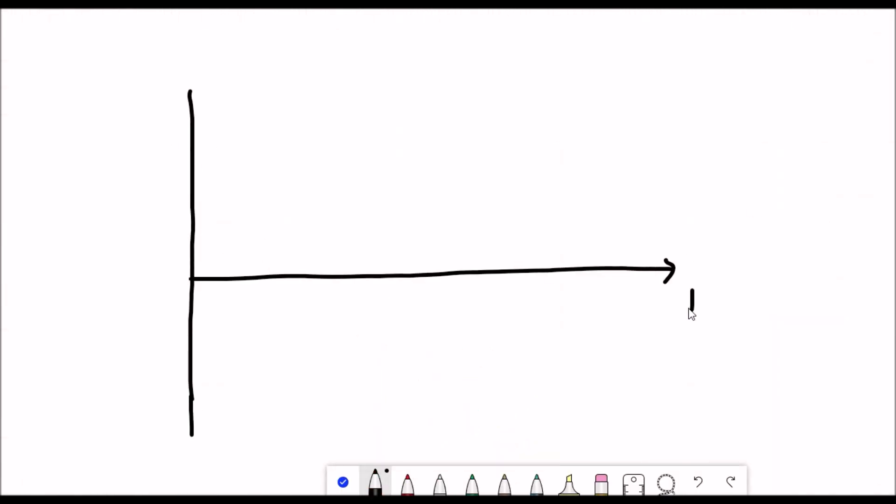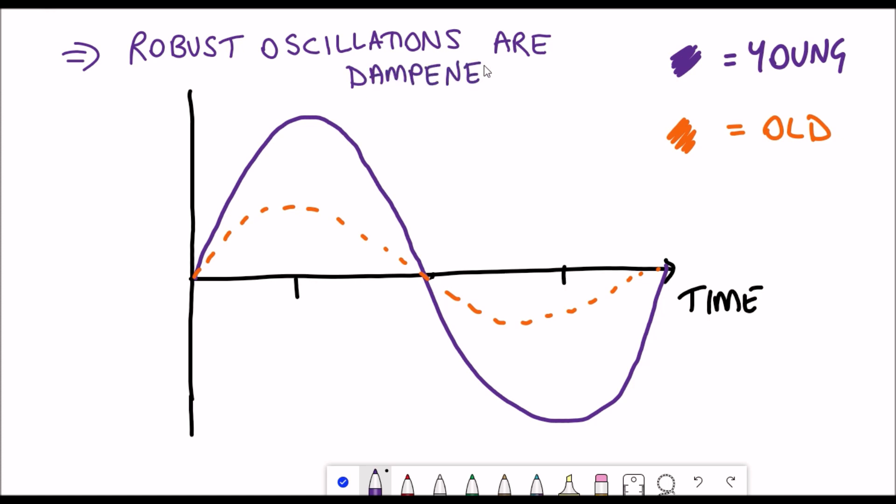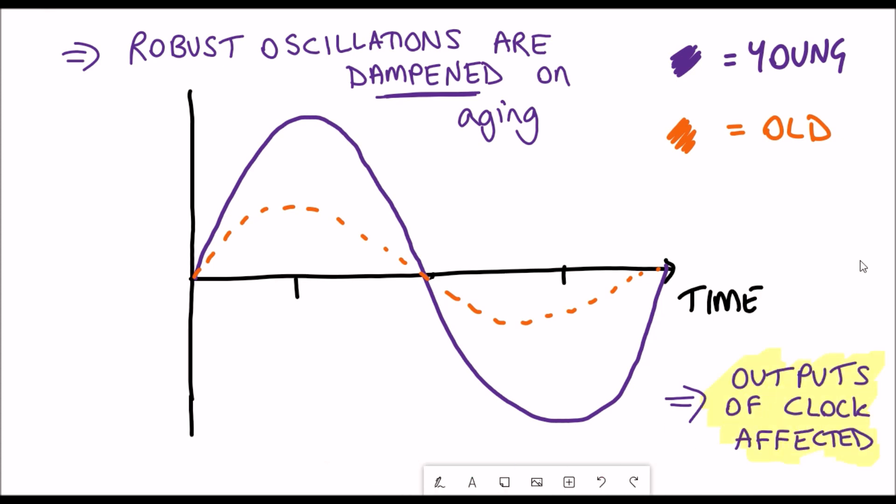What happens on ageing is that there seems to be a loss of these robust rhythmic oscillations that occur on the roughly 24-hour timescale. This obviously has an impact on the genes that are going to be expressed. You effectively lose these robust oscillations as they get dampened during ageing. But the key thing is that this affects the output.